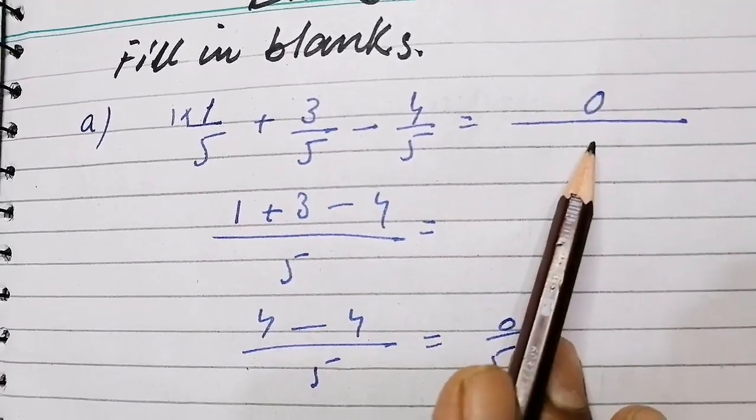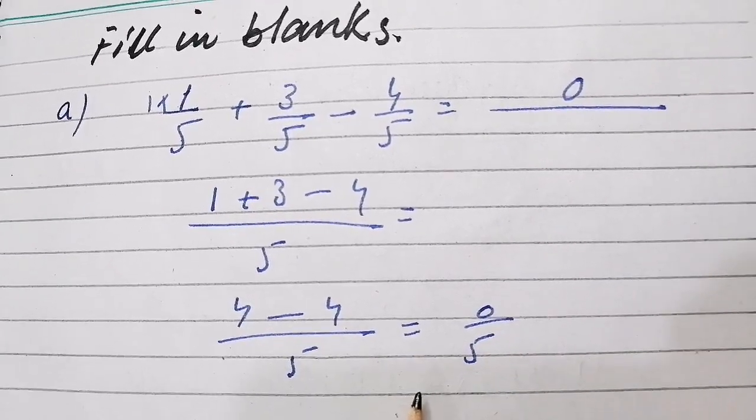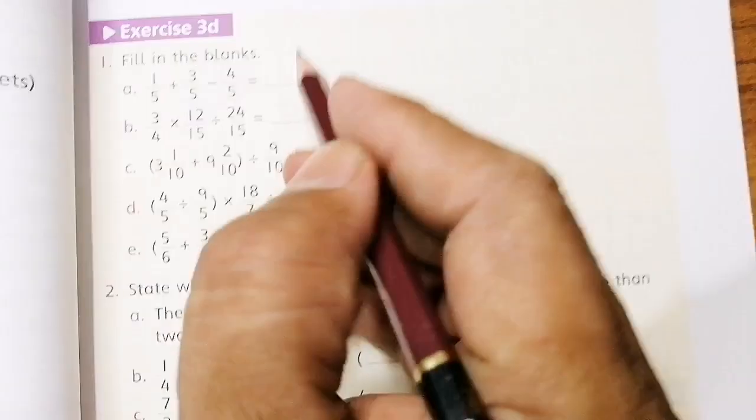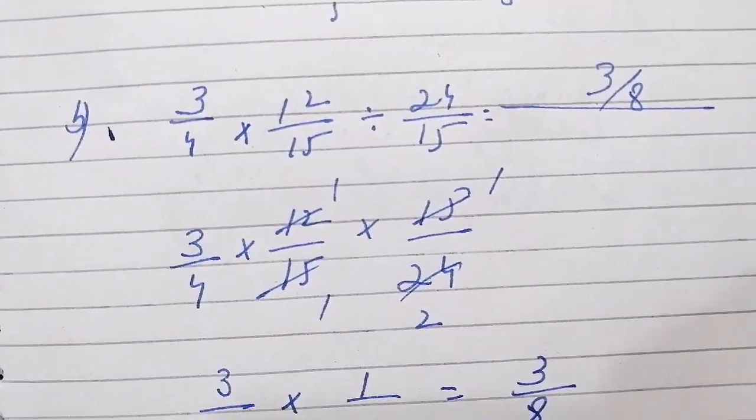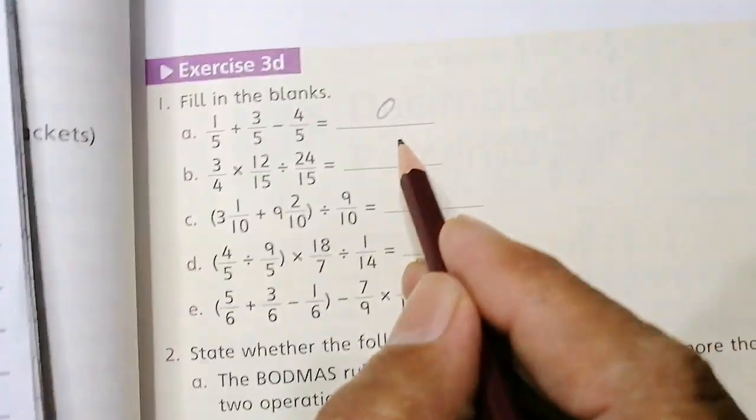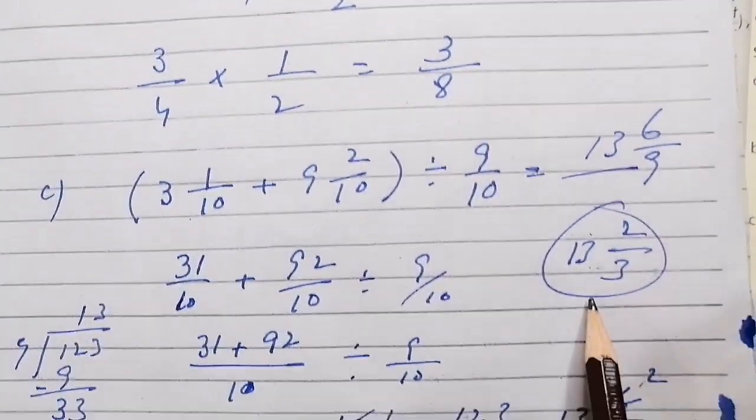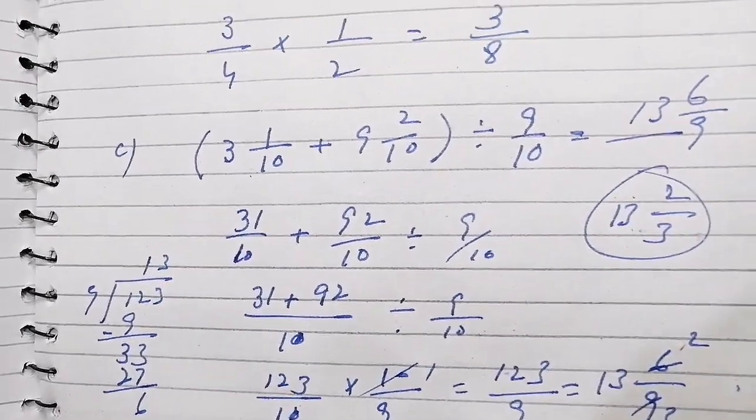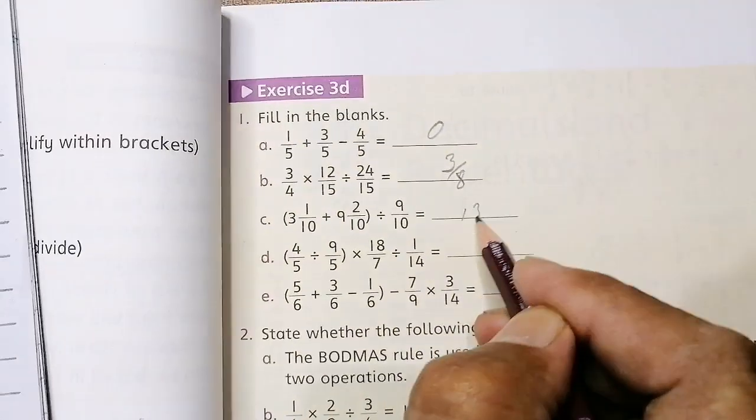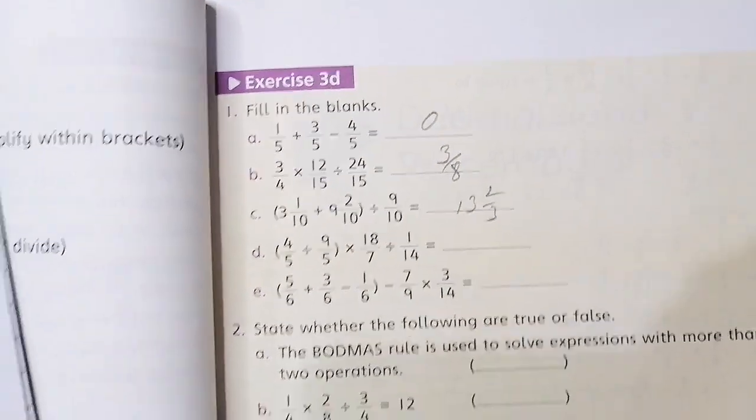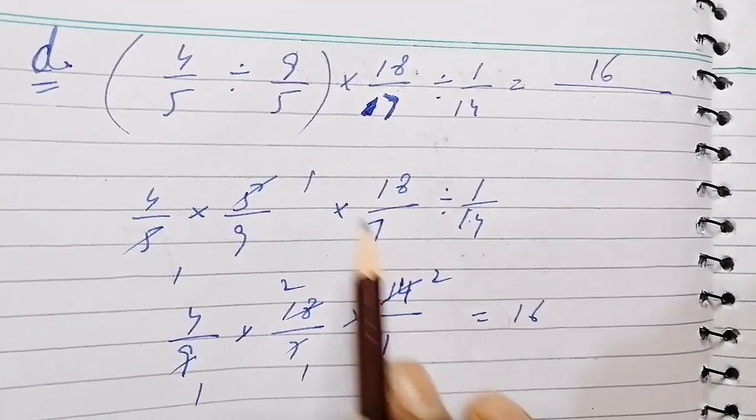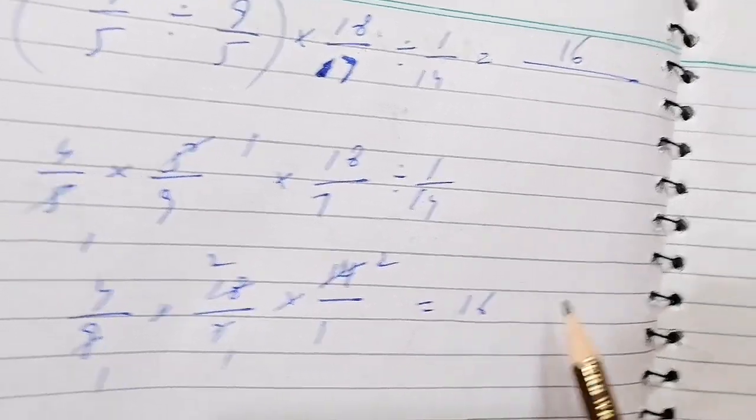A part: 1 over 5, 3 over 5, we can write 0. B part I have solved: 3 over 8, 3 over 8. C part: 13 whole 2 over 3, 13 whole 2 over 3. Similarly, D part: 16. E part: 1, 2.